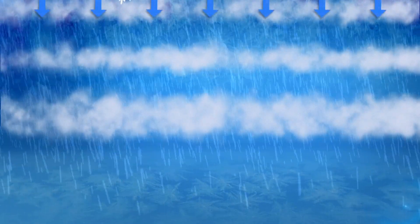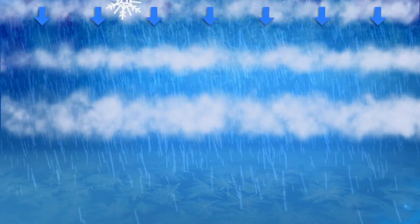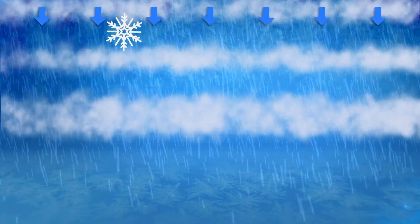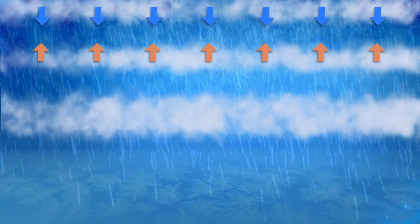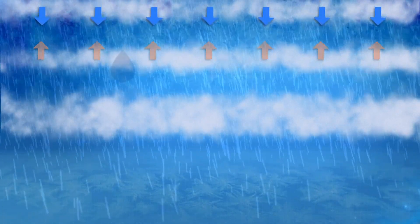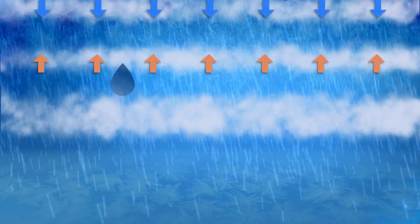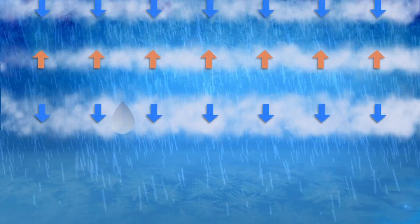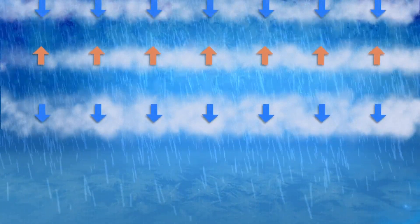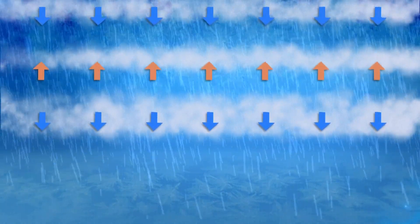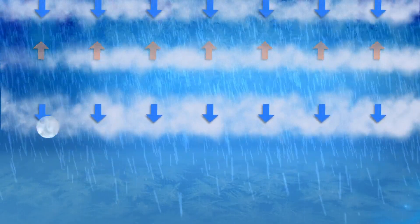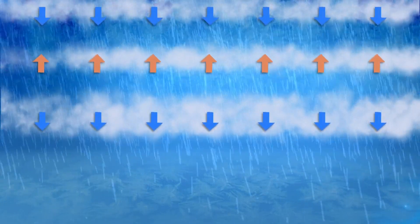Here's what happens. Snow falls from a below freezing layer in the clouds, drops into a layer of above freezing air, and melts into a regular old raindrop. Then that raindrop falls into a frozen layer closer to the ground. Now, if that layer of air is thick enough, the raindrop freezes into an ice pellet. We call that sleet.